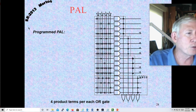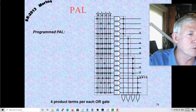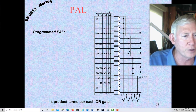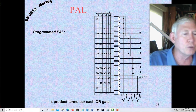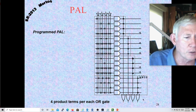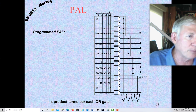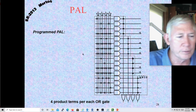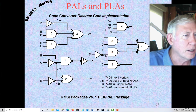Here's a programmed PAL — this PAL has four AND gates associated with each output. So you can only have four product terms for each of your outputs — at least in this part, that's how it was set up. Here's a list of some of the commercially available PALs from a number of years ago — probably not relevant today.